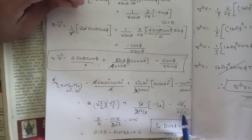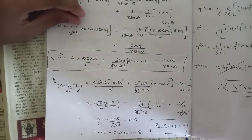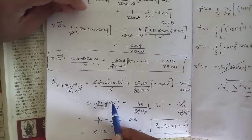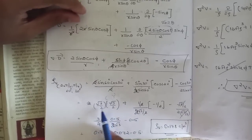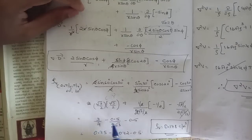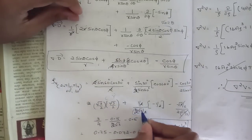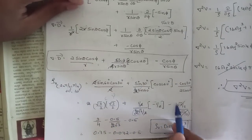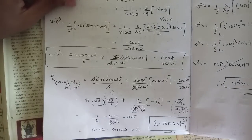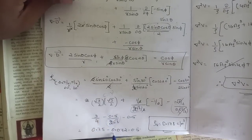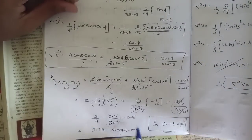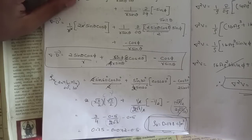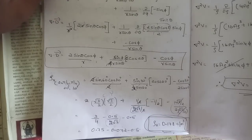After cancellation, the first term gives (√3 × √3)/4 = 3/4 = 0.75. The second term simplifies with 2sin60° = √3 in the denominator; using −cos120° = 1/2, the term evaluates to approximately 0.072. The final ρv = 0.75 − 0.072 − 0.5 ≈ 0.178 coulombs per meter cubed.